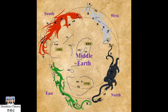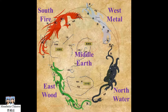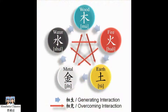Earth is the sowing and reaping, representing stabilizing, grounding energy. According to the five elements theory, the Azure Dragon represents wood, the Vermilion Bird is fire, the White Tiger represents metal, and the Black Warrior is water.